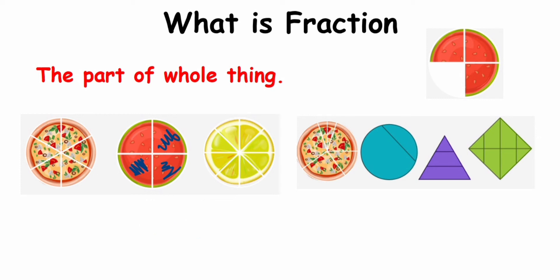Similarly, you can see in the lemon also. The lemon is made into how many parts? One, two, three, four, five, six, seven, eight — eight parts. Suppose we have removed three parts. How many parts are left? One, two, three, four, five — five upon eight. This is how a fraction is represented.